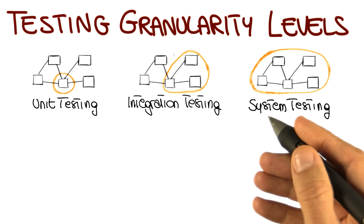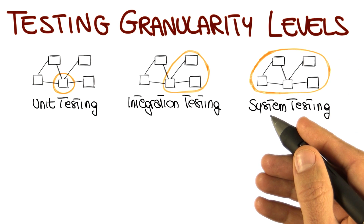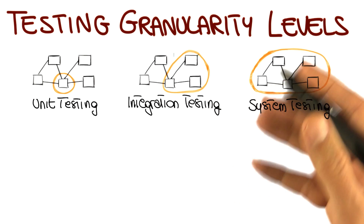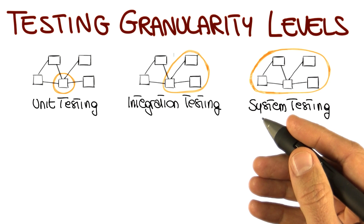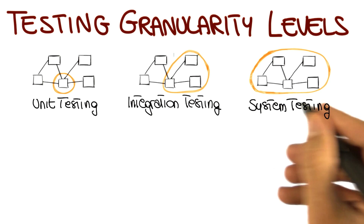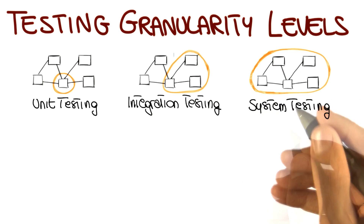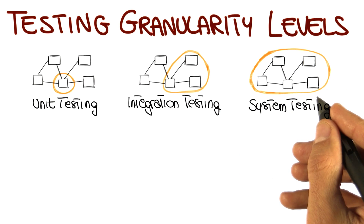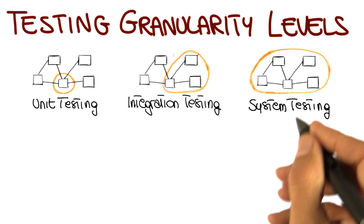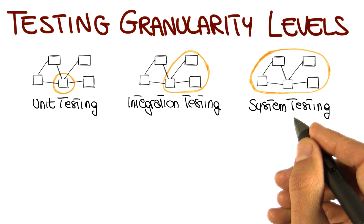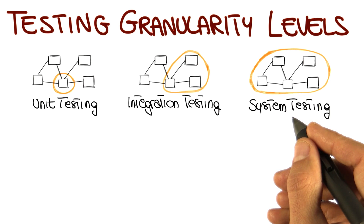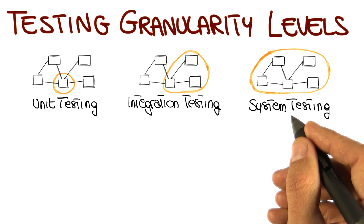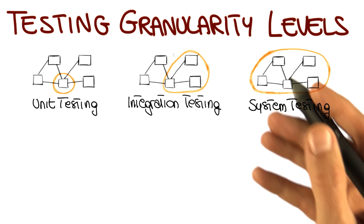System testing includes both functional and non-functional testing. We will discuss these in detail in the next two lessons, but intuitively, functional tests aim to verify the functionality provided by the system. For example, considering the function double value that we saw earlier in the lesson, a functional test will try to assess that that function is producing the right value given a specific input.